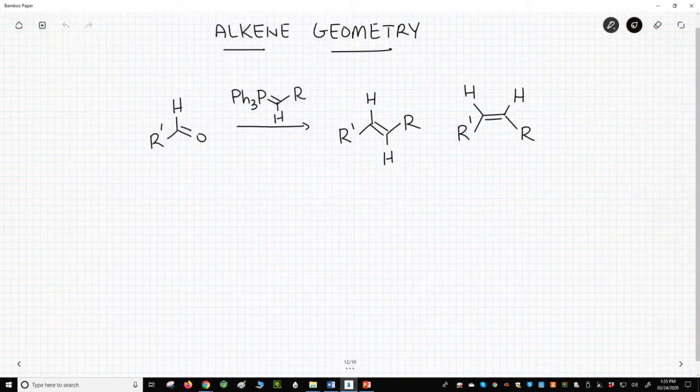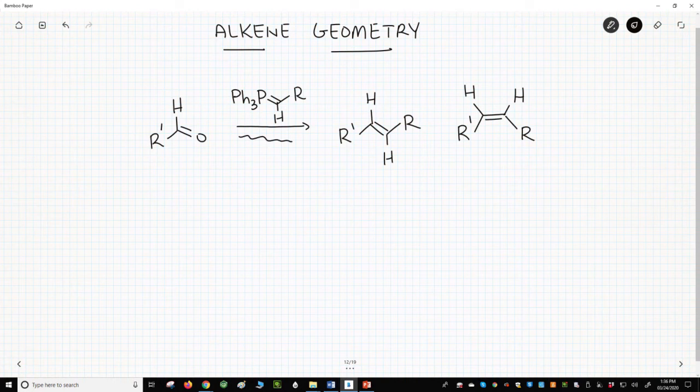On the screen is a typical Wittig reaction between a Wittig reagent and an aldehyde. This reaction will make an alkene, but there are two possible alkenes. It could be the E alkene shown on the left, or it could be the Z alkene on the right. Which one forms, or will there be a mixture?